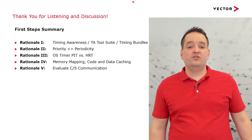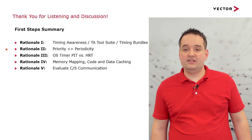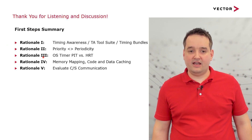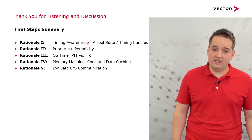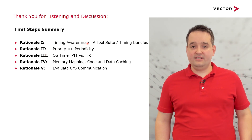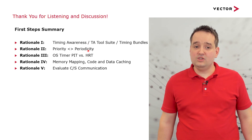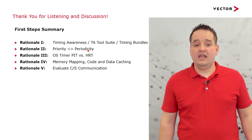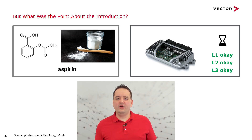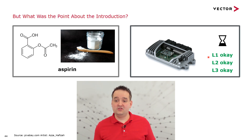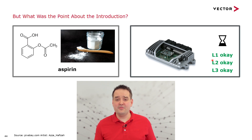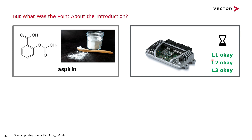What can we learn from this? Your first steps can be immediately applied to your projects. I provided five rationales to start with timing awareness and perform analysis with the Timing Architects tool suite. We talked about the relation between priority and periodicity in tasks and runnables, compared the runtime effect of both OS timer features, the importance of memory mapping, and evaluating client-server communication. Coming full circle from the introduction: the unknown substance turned out to be aspirin, and an unknown ECU can be understood through levels 1, 2, and 3 runtime analysis — applying both reduces headache.